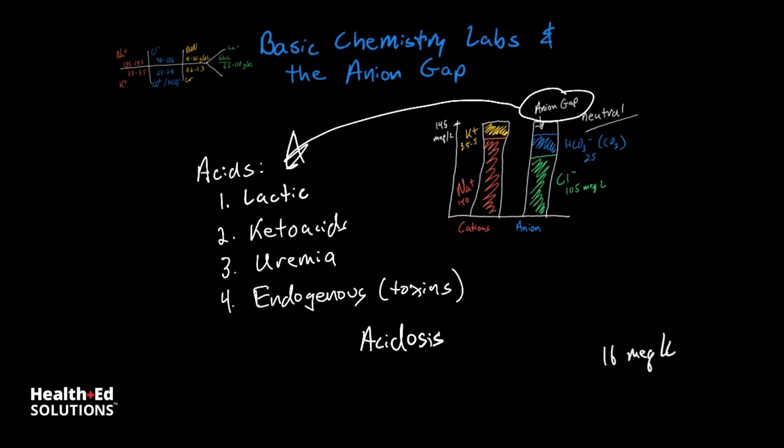So if we have an ABG that shows that we have a pH that's less than 7.35, we know we have an acidosis. And then if we look at our chemistry labs, and we realize that when we add up our potassium and our sodium, and we come up to around 145 milliequivalents, and then we add up our chloride and our total CO2 or bicarbonate, and we only come up with say 115, then that suggests that we have a high gap acidosis. If we have a pH of less than 7.35, and we look at the anion gap, if we take our sodium and potassium, add it together and subtract our chloride and CO2, and we end up with an anion gap that's 16 milliequivalents or less, then it is non-gap.